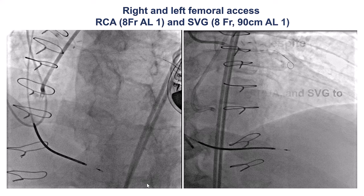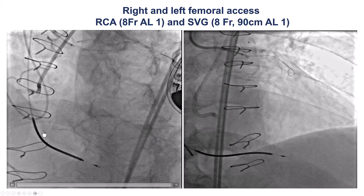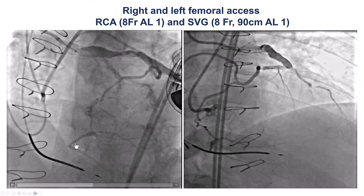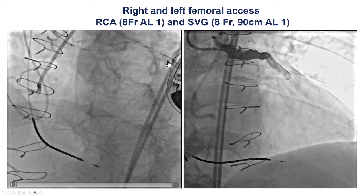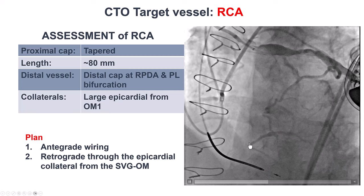Dual injection showed an occlusion of the proximal right coronary that had significant calcification and a tapered entry, and long occlusion length. There is a small segment of the distal RCA before the bifurcation of the PDA-PLV, and a large epicardial collateral coming from the obtuse marginal filling the distal vessel. Clear proximal cap tapered, but long occlusion length, with a bifurcation close to the distal cap and an epicardial collateral.